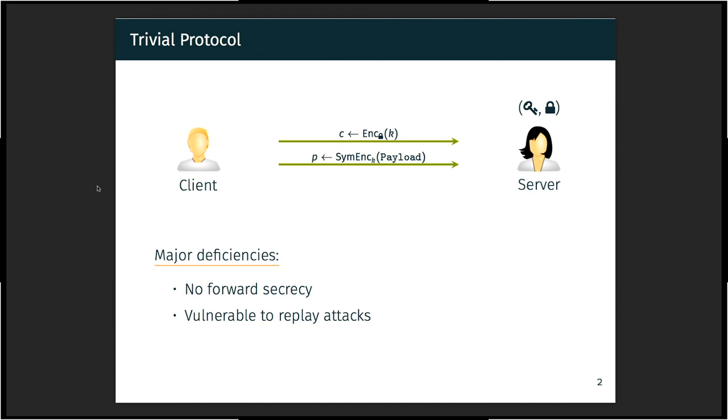We basically use an asymmetric encryption scheme at the server. The client encrypts some key under the public key of the server, encrypts the payload under the symmetric key, and sends it all to the server. The server can then unwrap the symmetric encryption key and read the data. However, if you use such a simple protocol, we have some major deficiencies. First of all, there is no forward security.